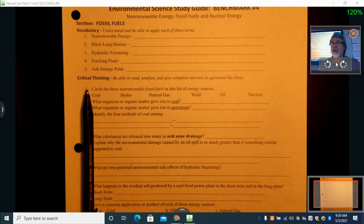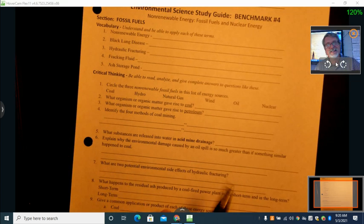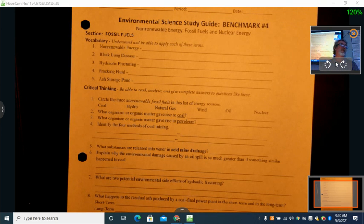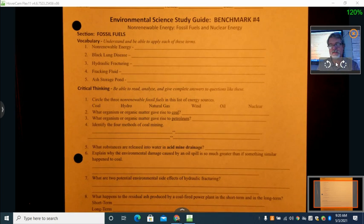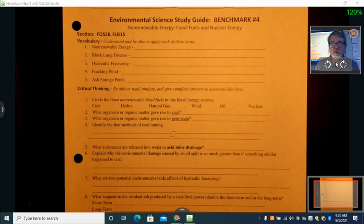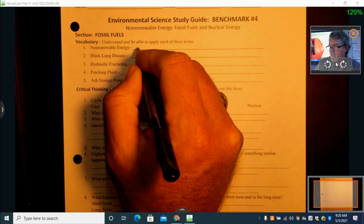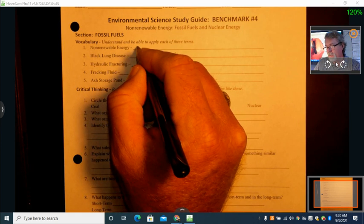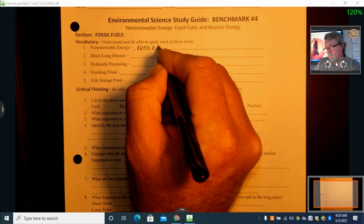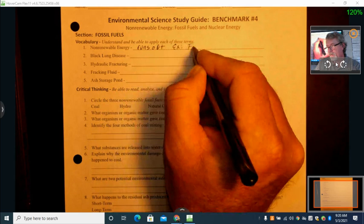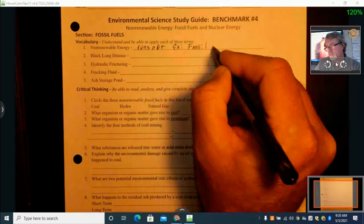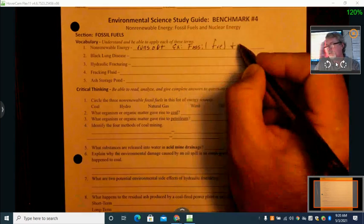All right guys, now we'll look at benchmark four for the non-renewable energy sources, nuclear and coal and those types of things. So let's get going here so that we can better ourselves and reach our goal of graduating with a high school diploma. Non-renewable energy is non-renewable. It runs out. Examples: fossil fuel and nuclear.